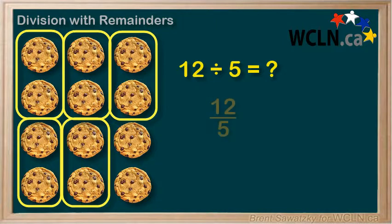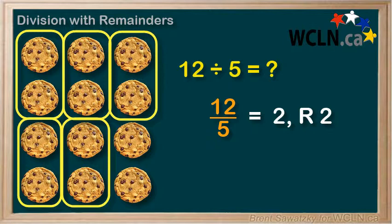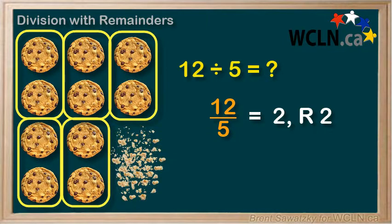We could write our division answer as two with a remainder of two. Or we could consider breaking down those whole cookies into pieces.